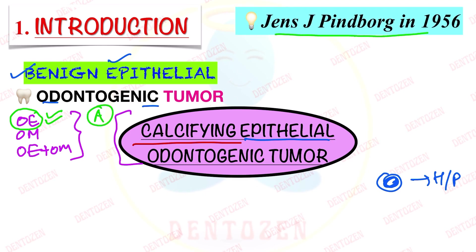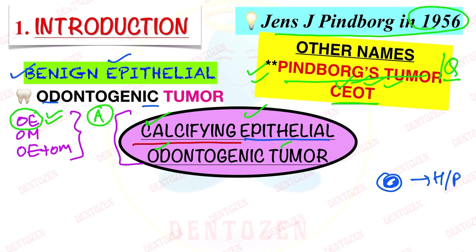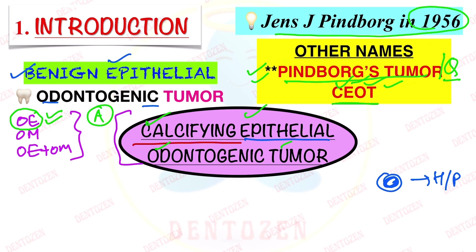Jens J. Pindborg in the year 1956 described this tumor, so from there it got its other name — Pindborg's tumor. This is a very important short-answer and exam question, and sometimes you can get your long question by the name Pindborg's tumor. Alternatively, it can be abbreviated as CEOT: C is calcifying, E is epithelial, O is odontogenic, and T is tumor.